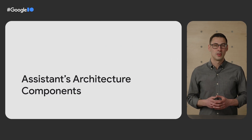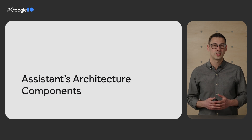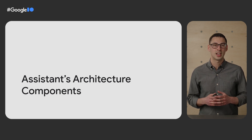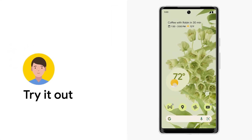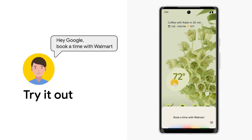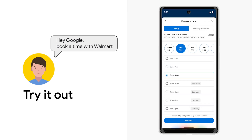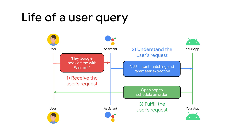Let's explore the components of Google Assistant's architecture that bring these conversational assistive experiences to life, and how you as the developer can plug into these tools to build on this infrastructure. Let's take a look at an example — planning a weekly grocery order. Assistant can now string together many segments of this journey: looking at items ordered most often, adding them to cart, placing the order, and then asking Assistant to book a pickup time with Walmart.